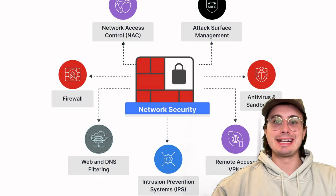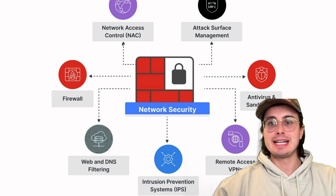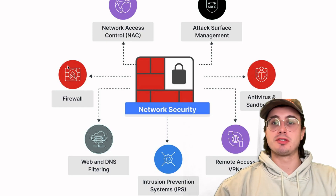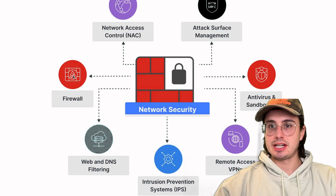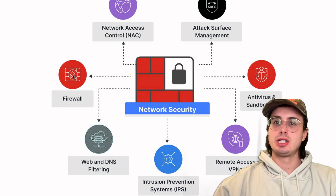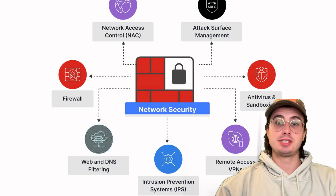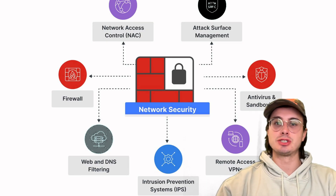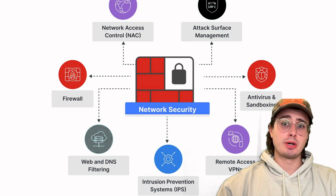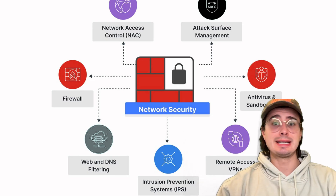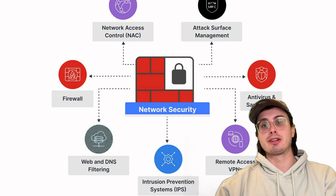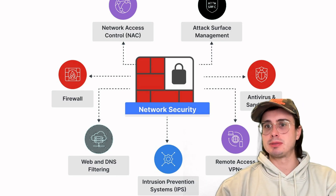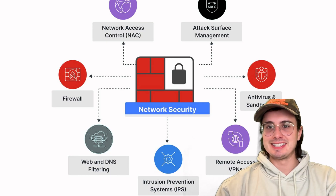Implement network access control lists, web and DNS filtering, and security groups — all crucial for traffic control. For firewall and security controls: implement next-generation firewalls with deep packet inspection, use web application firewalls for API endpoints, and deploy intrusion detection and prevention systems to identify and protect against intrusions. Always implement DDoS protection for anything public-facing, and regularly conduct vulnerability scanning and penetration testing to stay current with the latest threats.